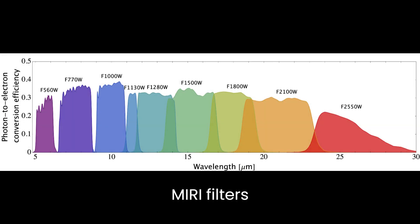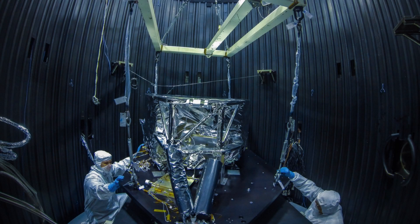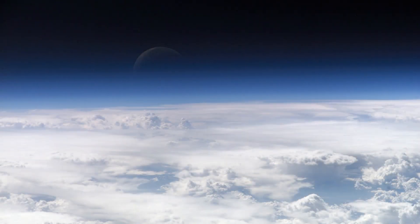This extreme cold is vital for the instrument's specialized detectors to function optimally. Why is mid-infrared observation so challenging from Earth? Much of it is absorbed by our planet's atmosphere, and the atmospheric heat further complicates matters.